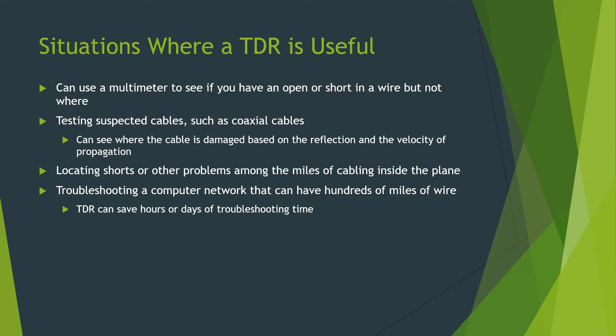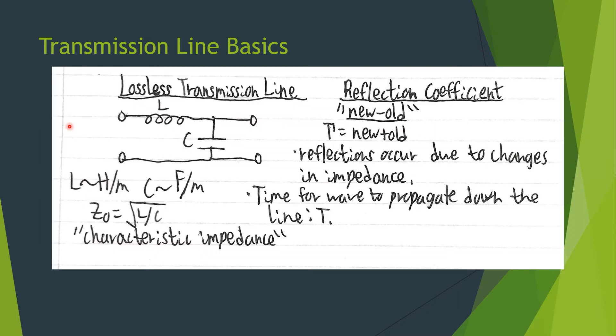The TDR can actually save hours or even days of troubleshooting time. Shown here is the model that we will be using for a lossless transmission line, which is composed of an inductance and a shunt capacitance, and we will be using this formula to calculate the reflection coefficient, which is the new impedance minus the old impedance over the new impedance plus the old impedance.